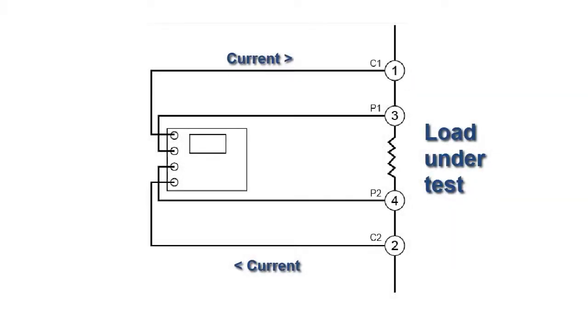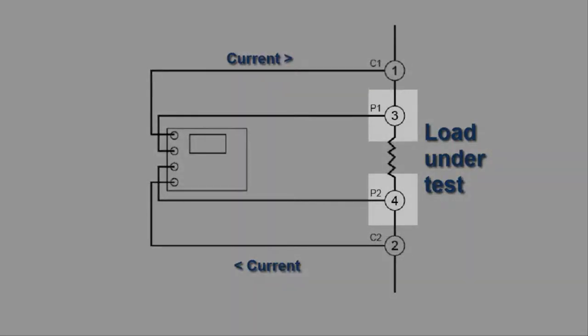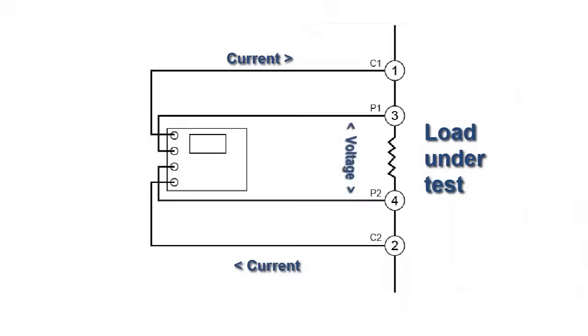In addition, the Kelvin technique employs a second pair of probes, labeled 3 and 4 on the screen, to sense voltage. The second pair is often called the sense probes.